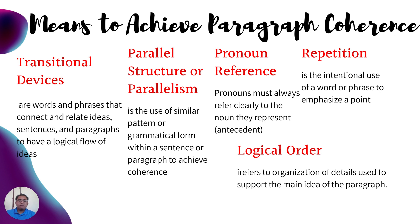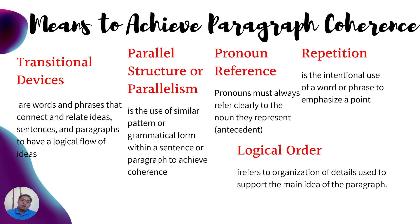To achieve a coherent paragraph, you have to use transitional devices — words and phrases that connect and relate ideas, sentences, and paragraphs to have a logical flow of ideas. Another is parallel structure or parallelism — the use of similar patterns or grammatical form within a sentence or paragraph. Next is pronoun reference — pronouns must always clearly refer to the noun they represent, or what we call the antecedent. Repetition is the intentional use of a word or phrase to emphasize a point. Logical order refers to the organization of details used to support the main idea of a paragraph.